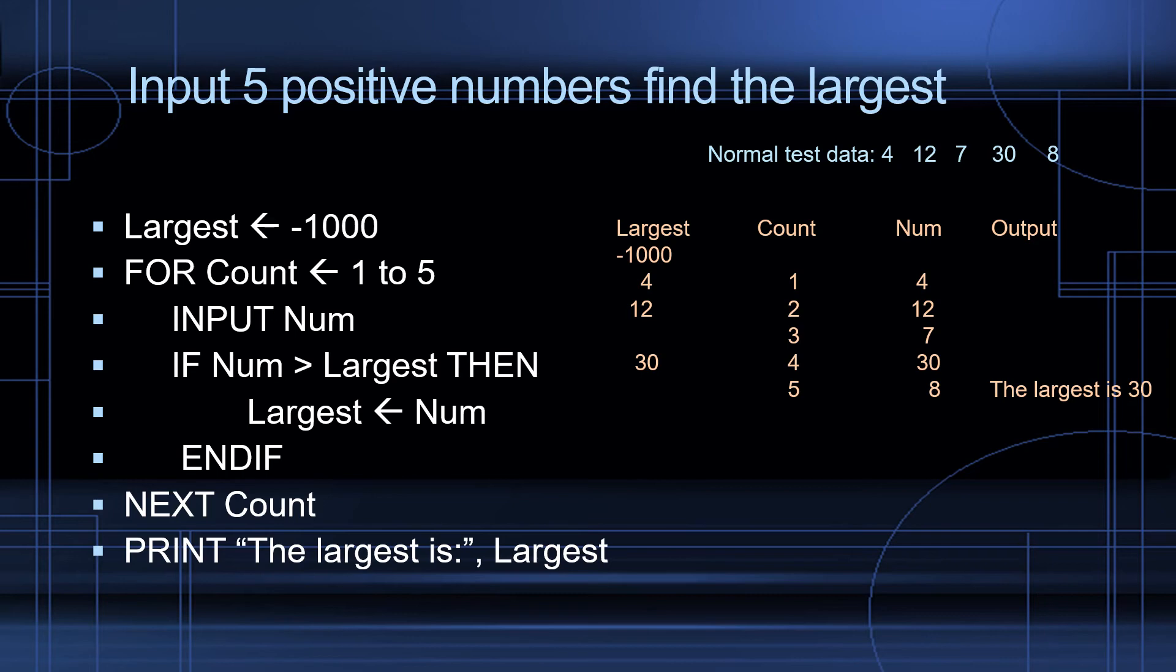Count equals 1. I input the first number. It's 4. I check 4 is larger than negative 1,000. So now I'm going to replace largest by 4. Next count. Count equals 2. I'm going to input 12. 12 is larger than what's saved in largest. It's larger than 4. So I'm going to replace largest by 12.